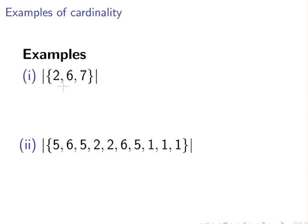So the first example here is how many elements in that set? Well, simply there is 2, 6, and 7. So there are 3 elements. And therefore, the cardinality is 3.